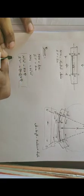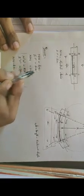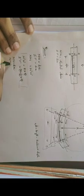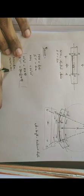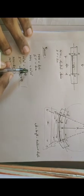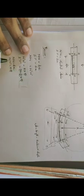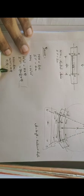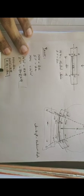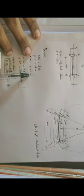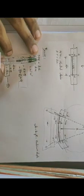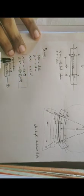The arc length of the neutral axis: NS is equal to R times theta, and NS is also equal to dx. Therefore R times theta is equal to dx.